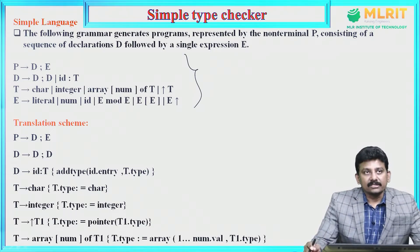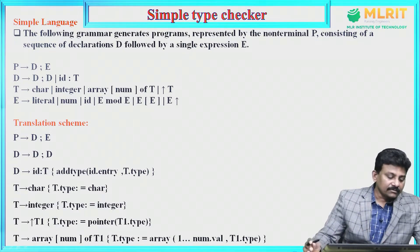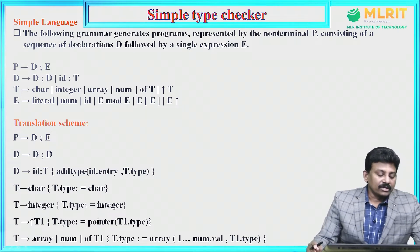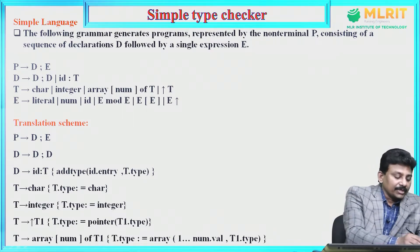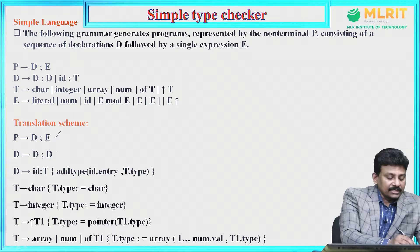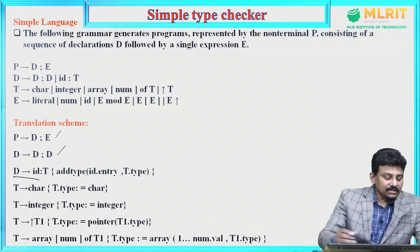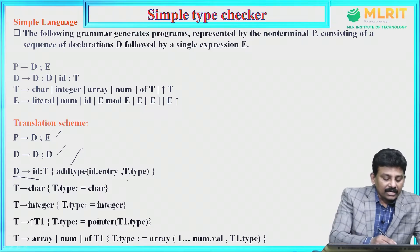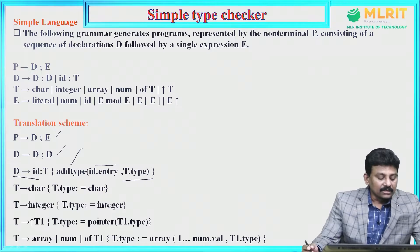Expression may also be E mod E, or E derives E square bracket within square bracket — representing the type of elements in the array — and a pointer expression. This is the grammar rule. For these grammar rules, we have to add translation schemes, that is semantic actions. P derives D semicolon E; D derives another declaration semicolon another declaration; D derives ID colon T.